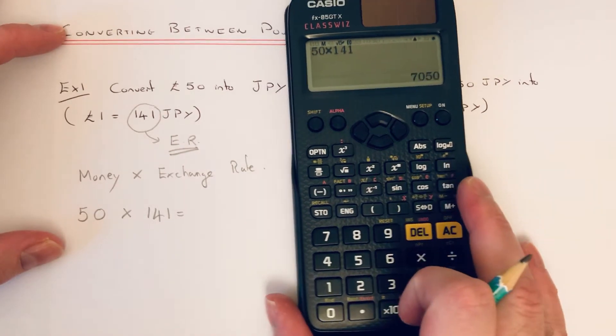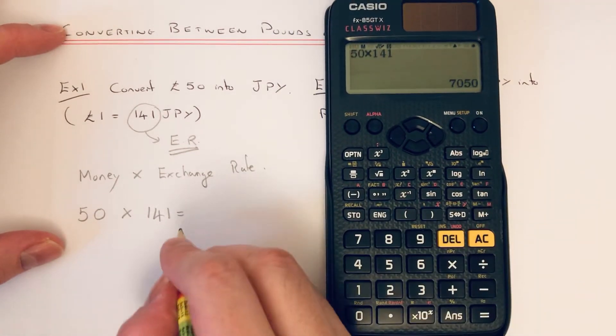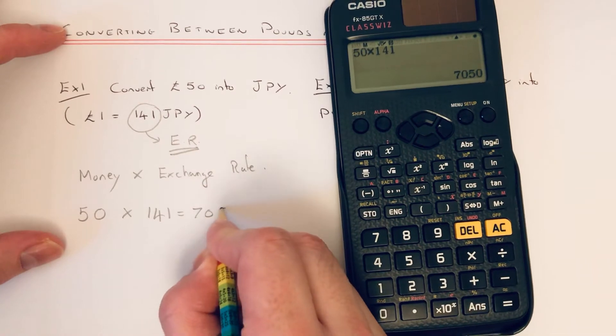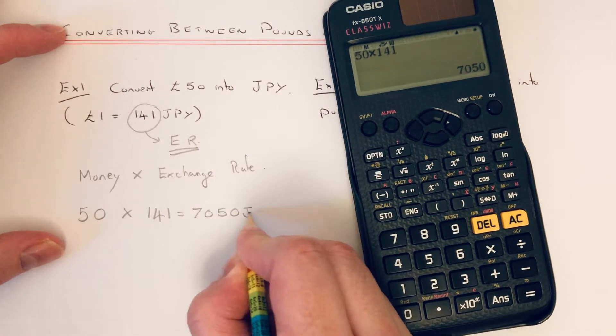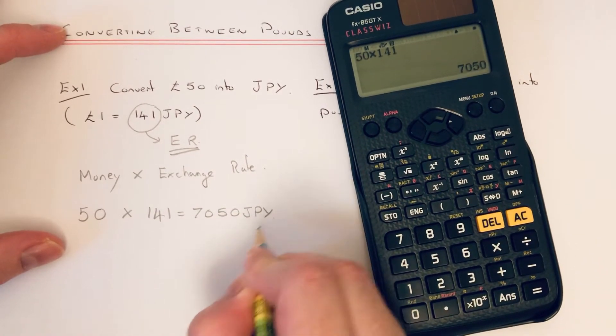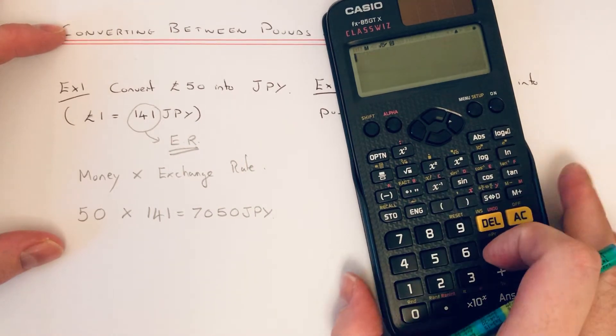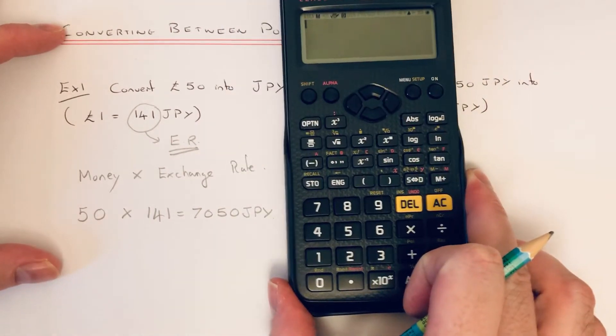You get an answer of 7,050 Japanese yen. So let's move on to Example 2.